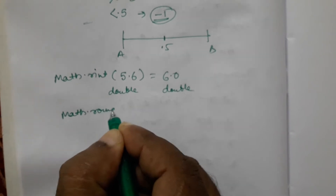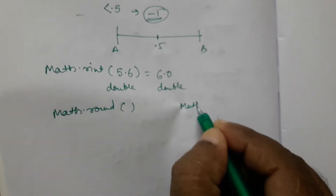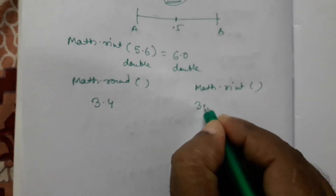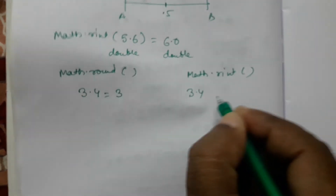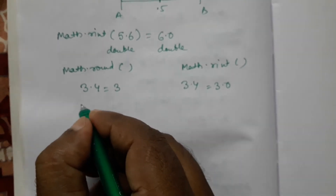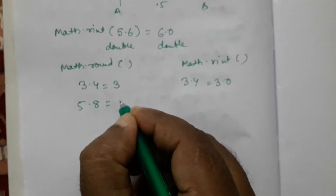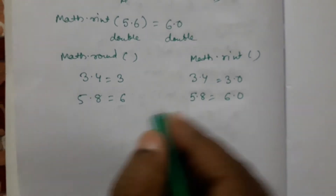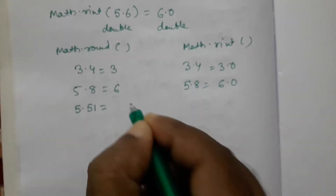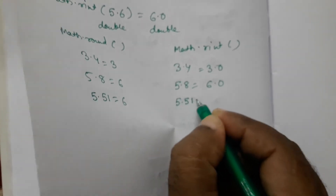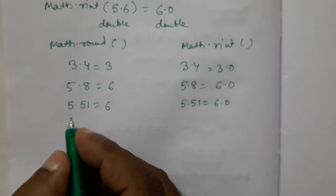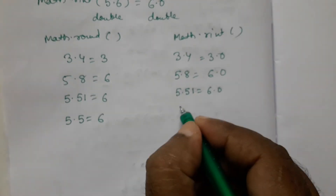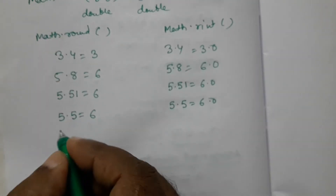For values like 3.4, Math.round gives 3 and Math.rint gives 3.0. For 5.8, Math.round gives 6 and Math.rint gives 6.0. For 5.51, Math.round gives 6 and Math.rint gives 6.0. Even for 5.5, Math.round gives 6 and Math.rint gives 6.0 — so far, no differences between them.